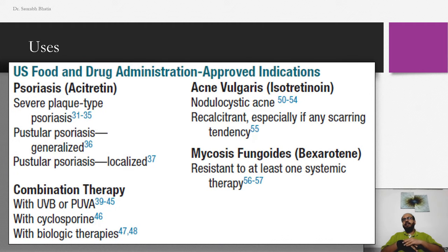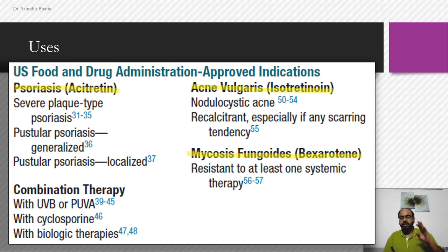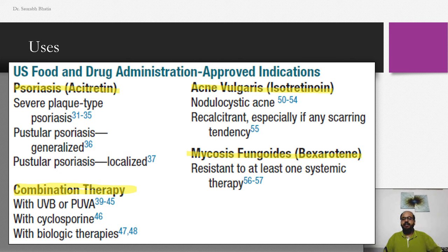We've now covered the different mechanisms of action of retinoids — their anti-inflammatory actions, slow-aging actions, and increased collagen production. For uses, there are only three FDA-approved indications: psoriasis (acetretin), isotretinoin for acne vulgaris, and bexarotene for mycosis fungoides. Combination therapies are also approved, but those are three core single-agent indications.